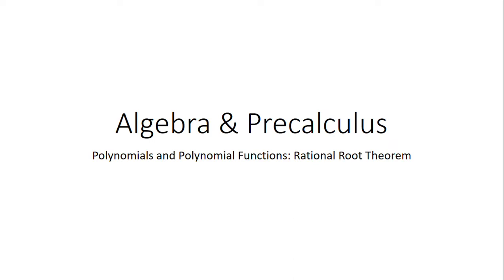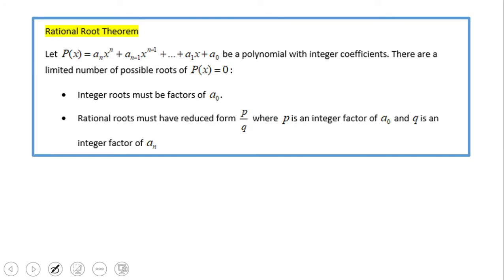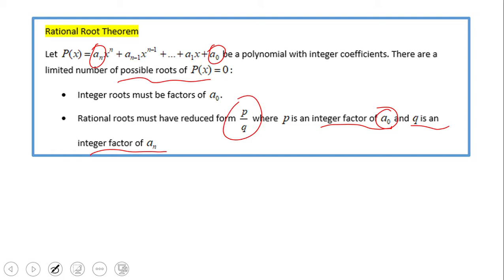Welcome and welcome back on C-Square. In this video we're going to talk about the Rational Root Theorem, which tells us that we can find possible roots of a polynomial equation by just looking at factors of a-sub-0 and factors of a-sub-n and creating what they call the P over Q fraction.